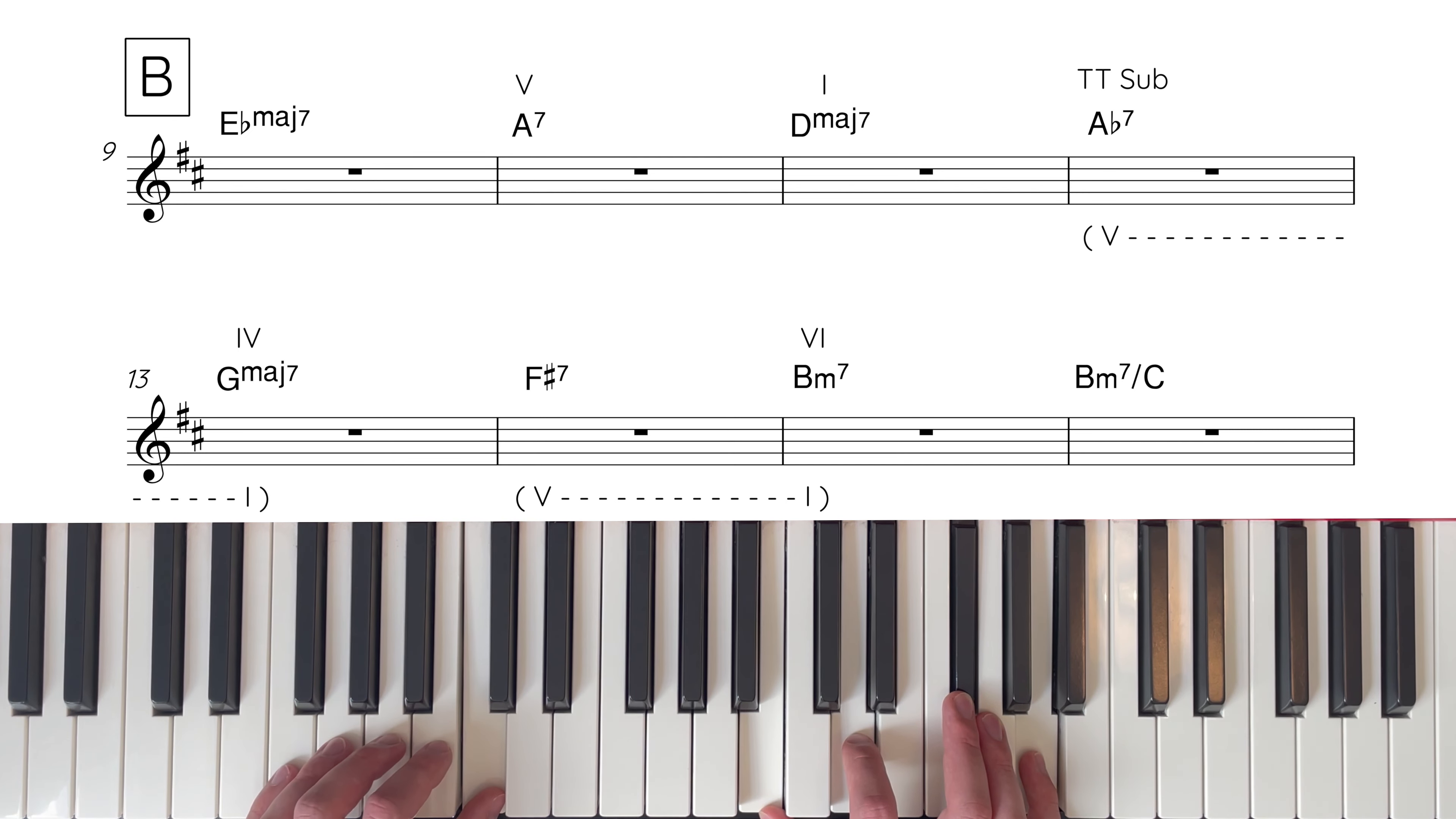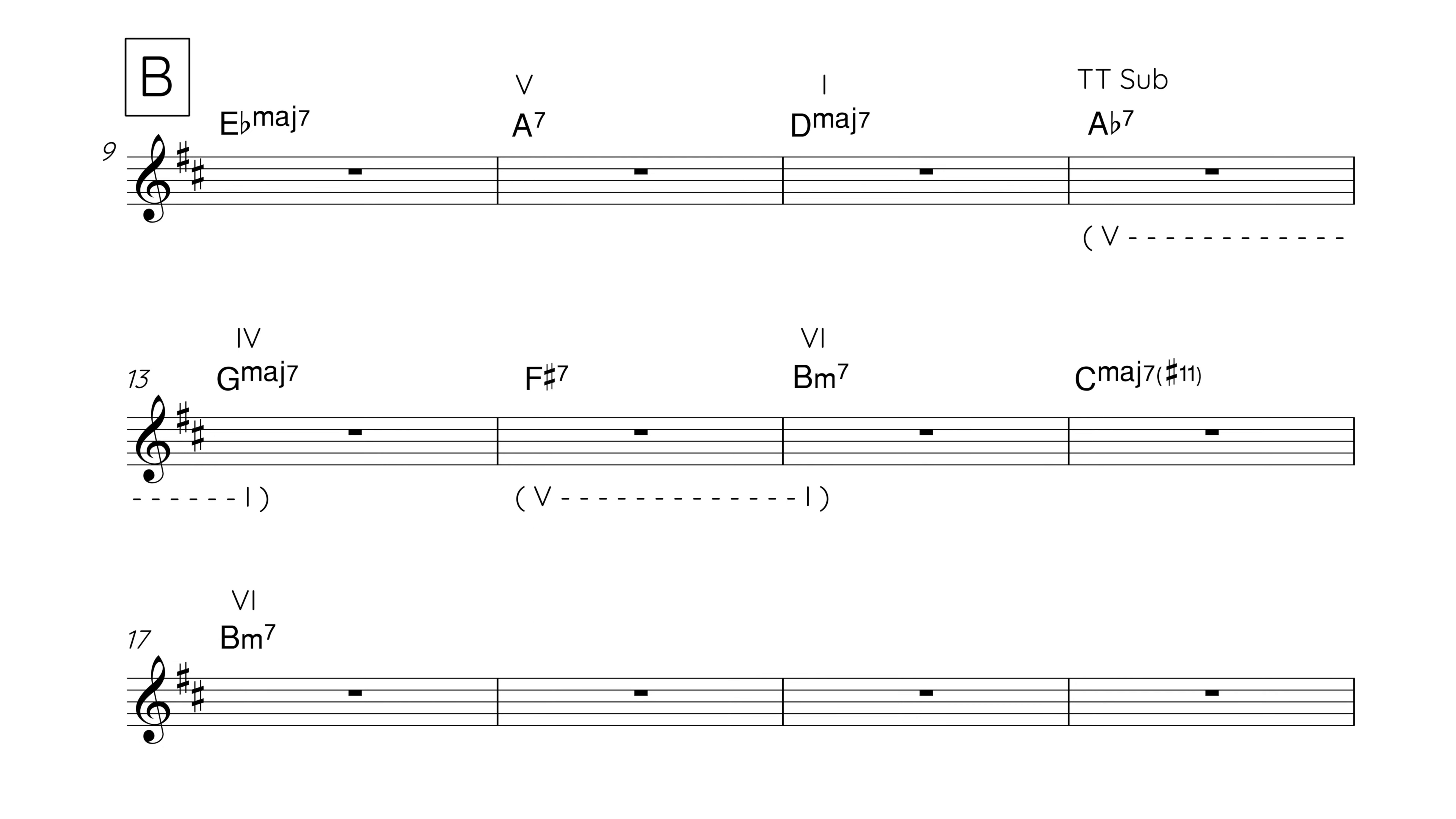The 2nd line starts on G major 7 and rather than staying here for 2 bars Cedar Walton drops the bass note by a semitone in the 2nd bar making the chord G major 7 over its 7th F sharp. Then, we move to chord 6 B minor 7 and the earlier bass fall is now mirrored and the bass note rises by a semitone in the 4th bar making the chord B minor 7 over C. So the bass line starts by descending by a semitone and ends by rising by a semitone but the disguise doesn't end here.